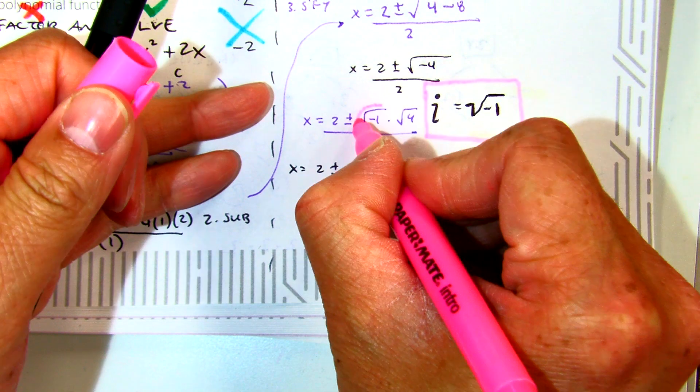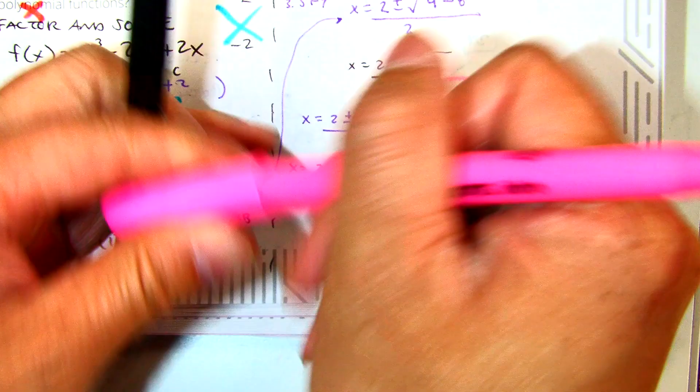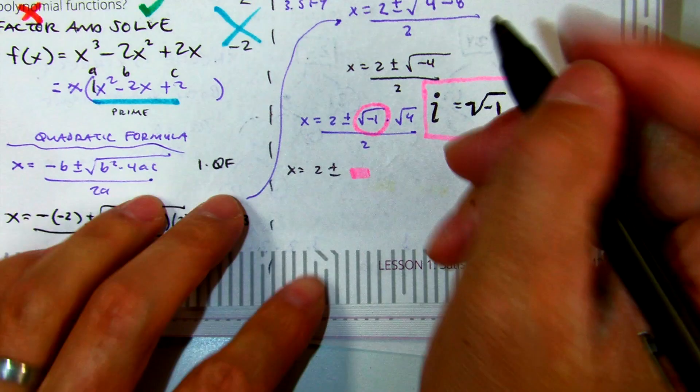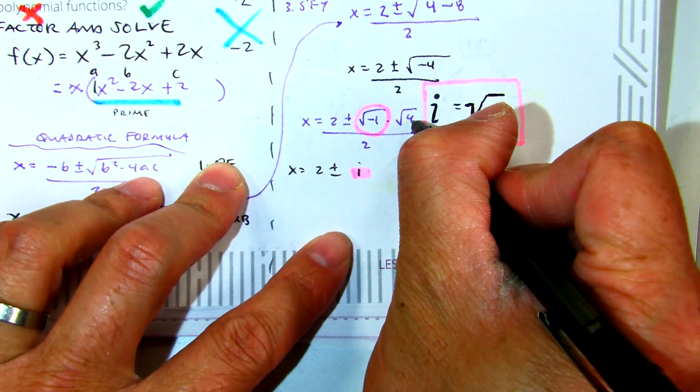So class, instead of writing square root of negative 1, what are we going to write? You're going to write an i. Class, the square root of 4? 2.